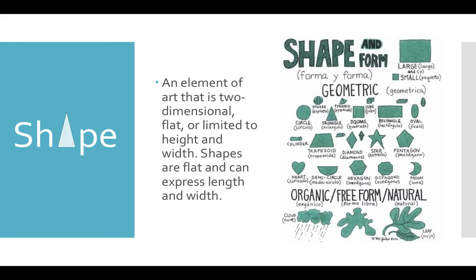Another element is shape. When you combine lines into closed forms, that's when you get your shape. All shapes are going to be two dimensional, meaning you have a height and a width to them — they are flat, expressed as having length and width. Shapes could be very geometric, or more organic like what you see in nature, or free form where there's really no rhyme or reason for them.